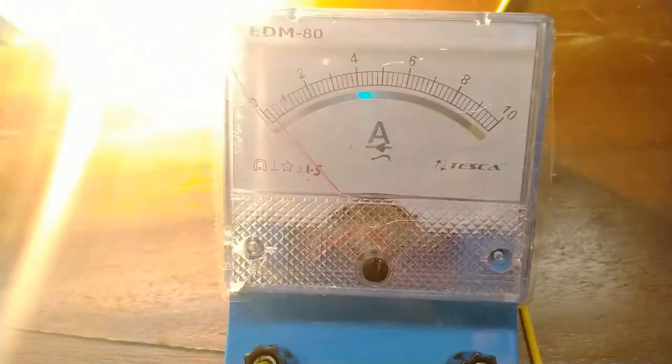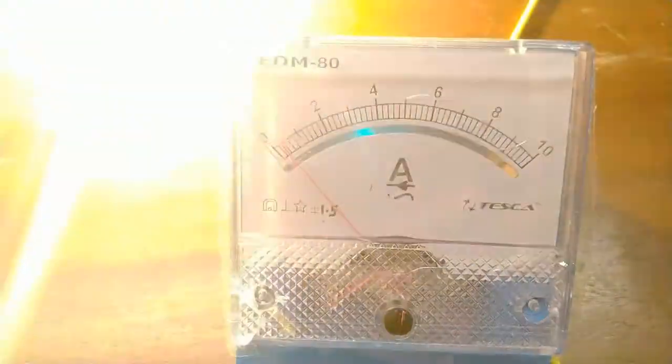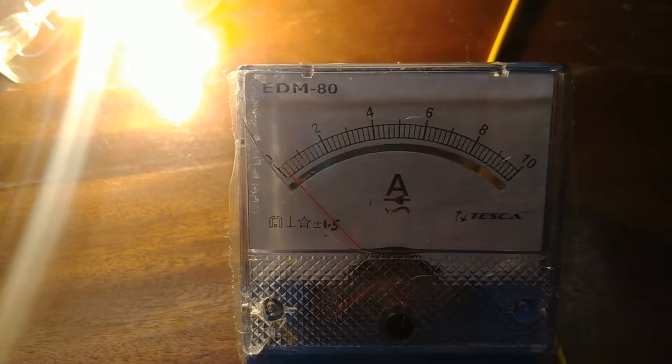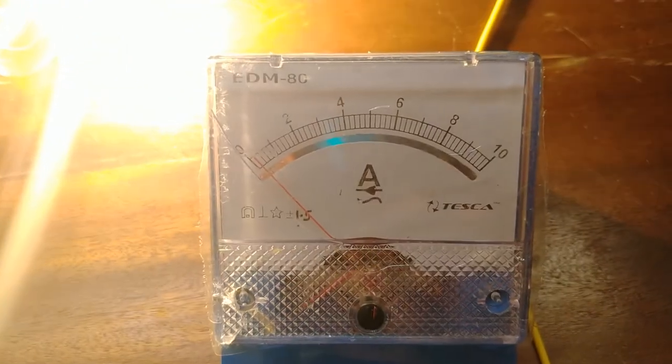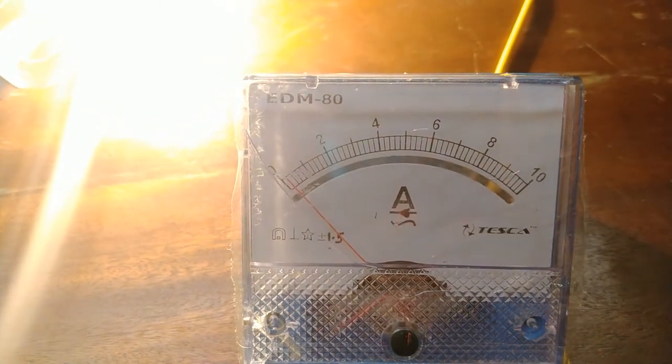The ammeter is measuring the load current. The current is approximately 0.3 ampere. So this is how an ammeter works.